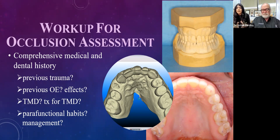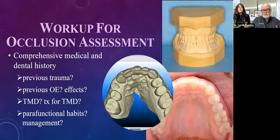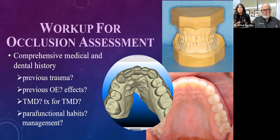Part of the comprehensive history should focus on occlusal factors. For example: has the patient had previous trauma affecting the dentition or TMJ? Has the patient undergone previous occlusal equilibration (OE)? Is that a red flag? And does the patient have any history of temporomandibular disorders or current TMD treatment? This is important for diagnostic and documentation purposes.